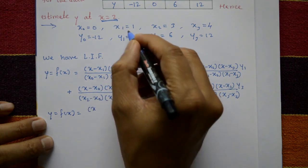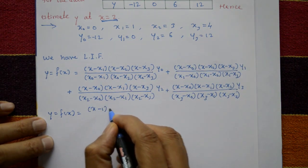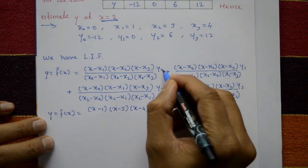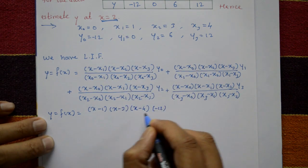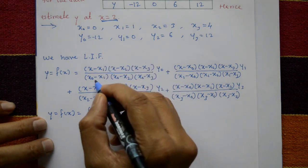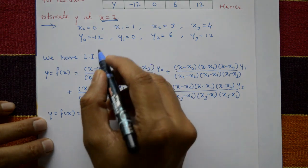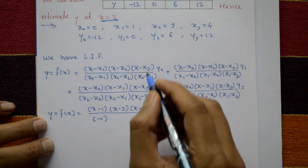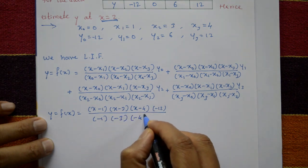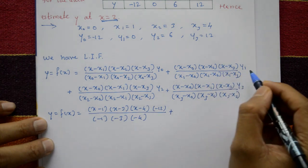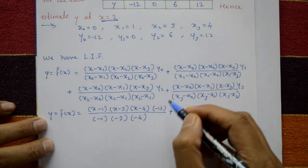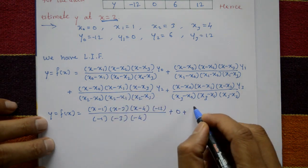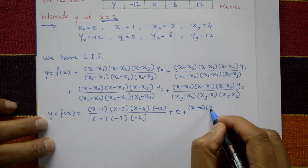Put x1, x2, x3 values: (x minus x1)(x minus x2)(x minus x3) times y naught, where y naught is minus 12, divided by x naught minus x1 which is minus 1, x naught minus x2 which is minus 3, and minus 4. The second term: y1 value is 0, and 0 into anything is 0, so the second term is 0.